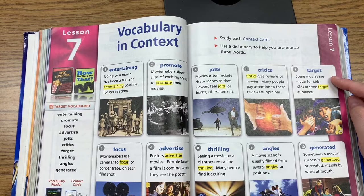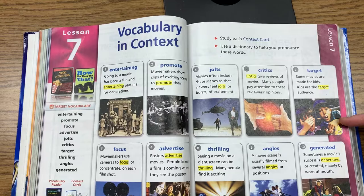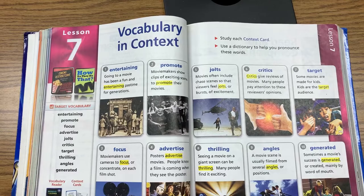Number seven, target. 'Some movies are made for kids — kids are the target audience.' We're not talking about Mr. Halstead teaching us archery and shooting a target. This target means that kids are the audience they want for this movie.